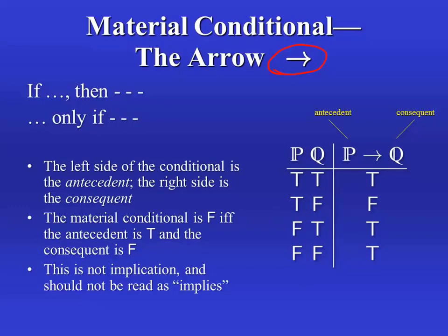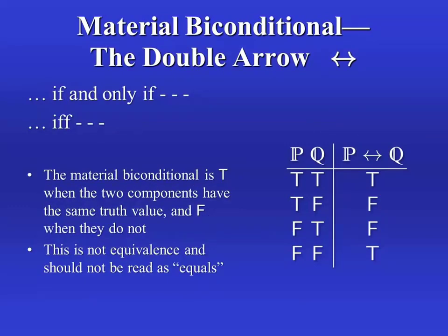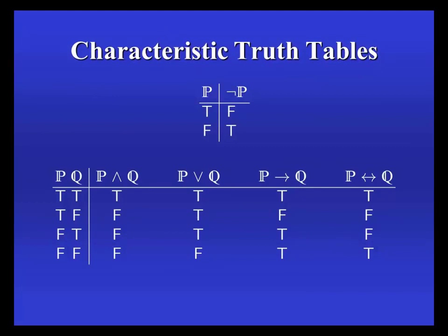The final connective is the material biconditional, represented with a double arrow, and we use it to represent 'if and only if'. We stick it between the two components to make the compound formula, and it is true when and only when the components have matching truth values. If they differ in truth value, as shown in the center two rows, then the biconditional is false. Here we have all the characteristic truth tables together in one slide so you can see how the connectives differ in their meanings.